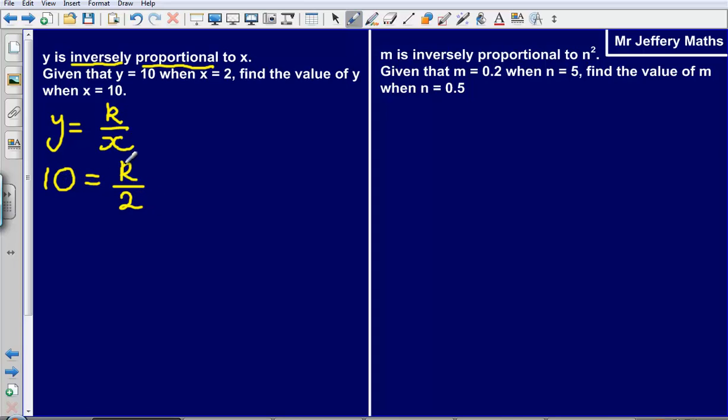We have 10 is equal to k over 2. So that means that k is going to be 10 multiplied by 2. And so what we can say is that k is equal to 20.